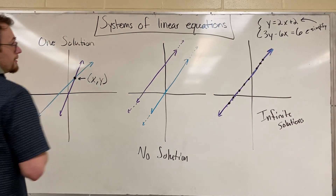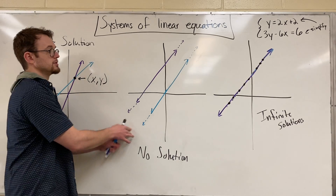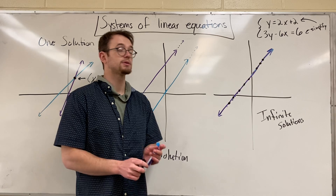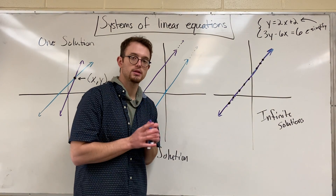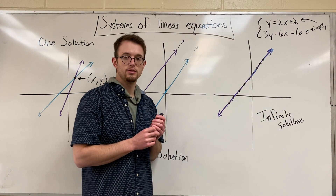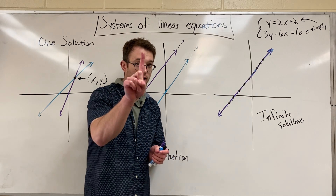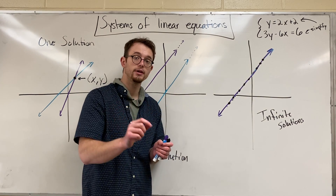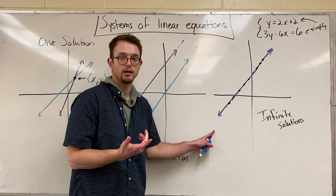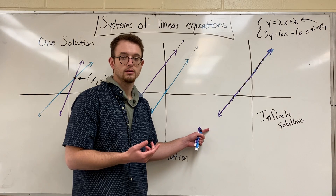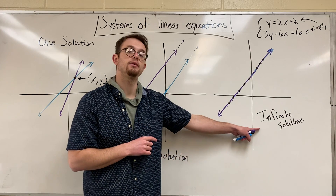So when talking about systems of linear equations, you can have one solution where the lines intersect, no solution where the lines are parallel, or infinite solutions. For my students — for anybody — if you have a question that says 'give the solution' or 'what type of solution does this system have' and you see a graph with one line, by default it's infinite solutions. You're only going to see one line, especially if it's printed in black and white.